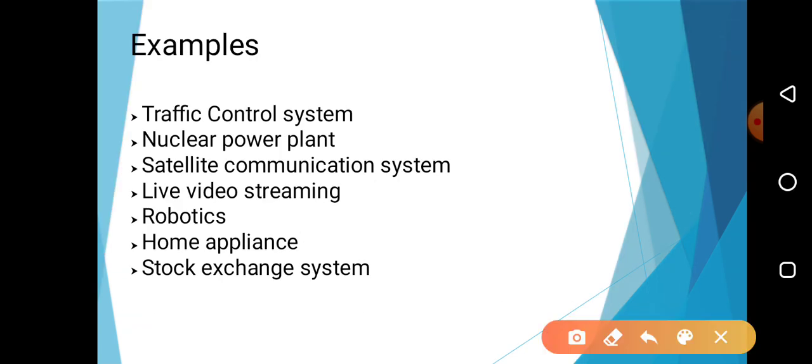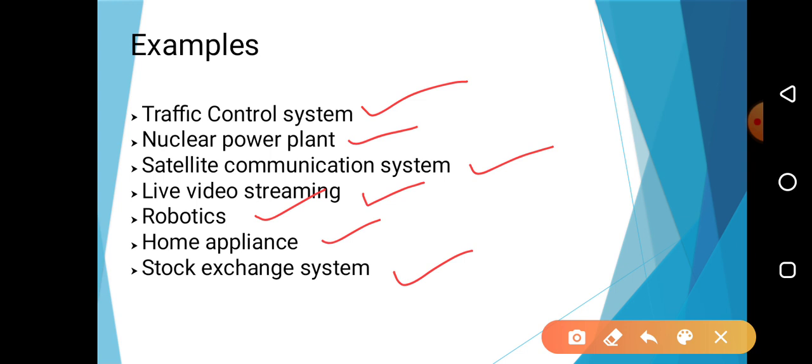Let's look at different examples of RTOS for a clearer image. Examples include: traffic control system, nuclear power plant, satellite communication system, live video streaming, robotics, home appliance, and stock exchange system. In a traffic control system, if you are not following the signal within the time, an accident will happen. In a nuclear power plant, if processes are not done within the time period, the plant will blast. Similarly, for satellite communication and stock exchange systems, if processes are not completed within the time period, it will stop or affect the system.